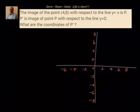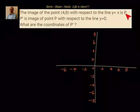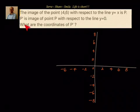We have been given the image of the point 4 comma 6 with respect to the line y equals to x, and that image is P. P dash is the image of point P with respect to the line y equals to 0. What are the coordinates of P dash?